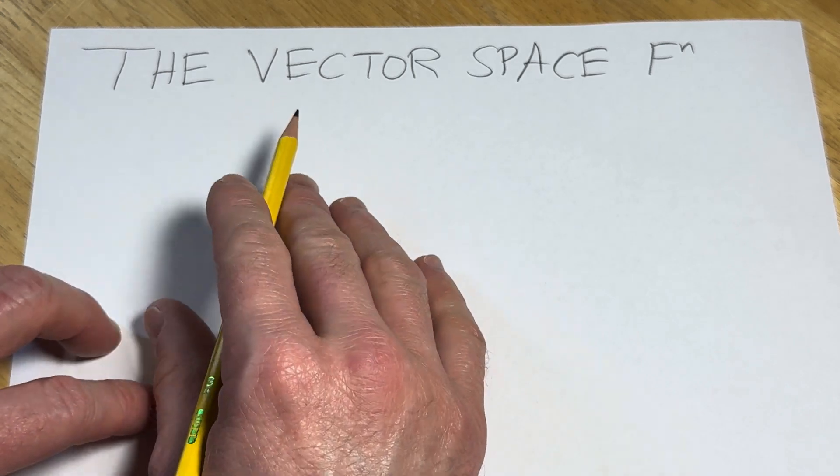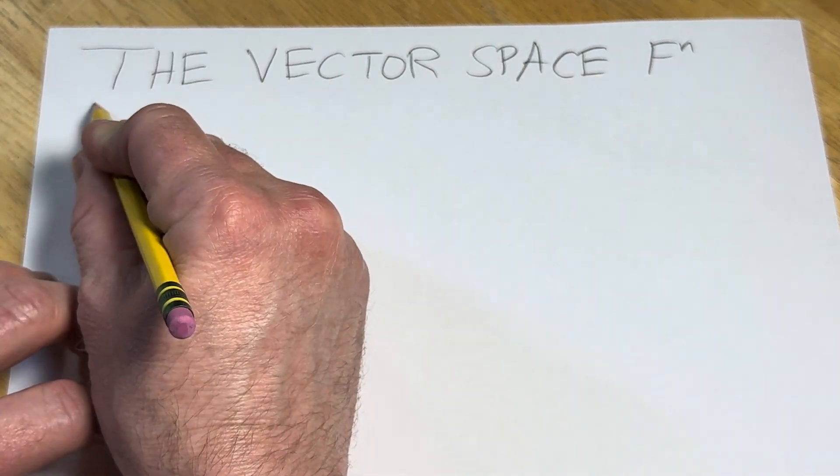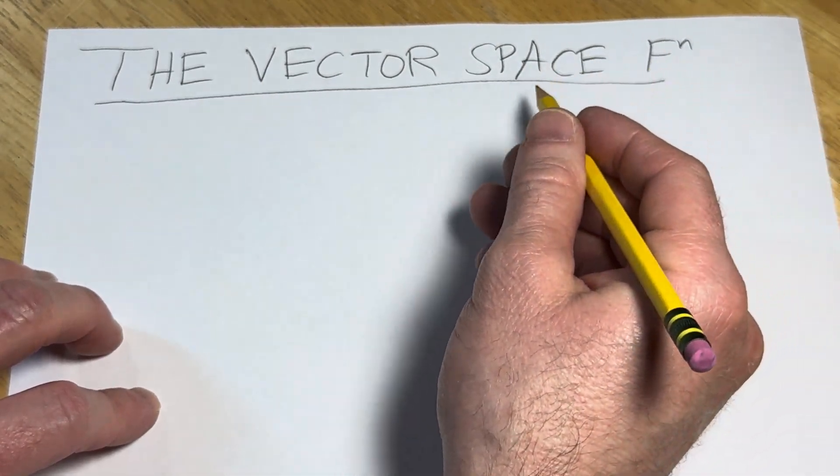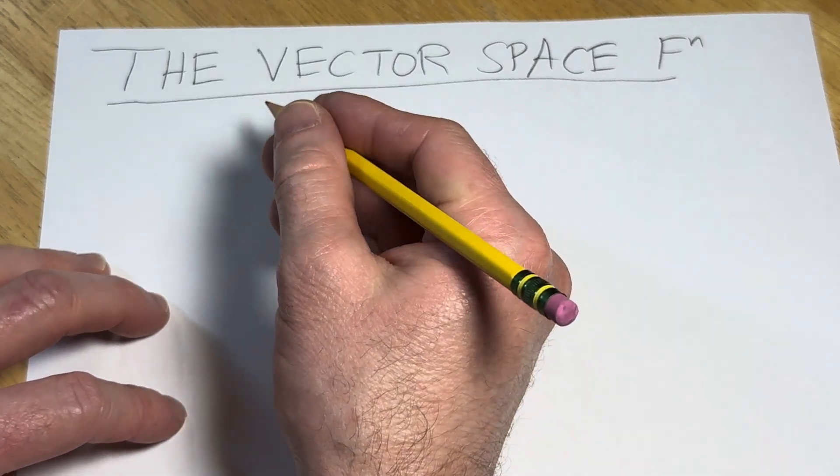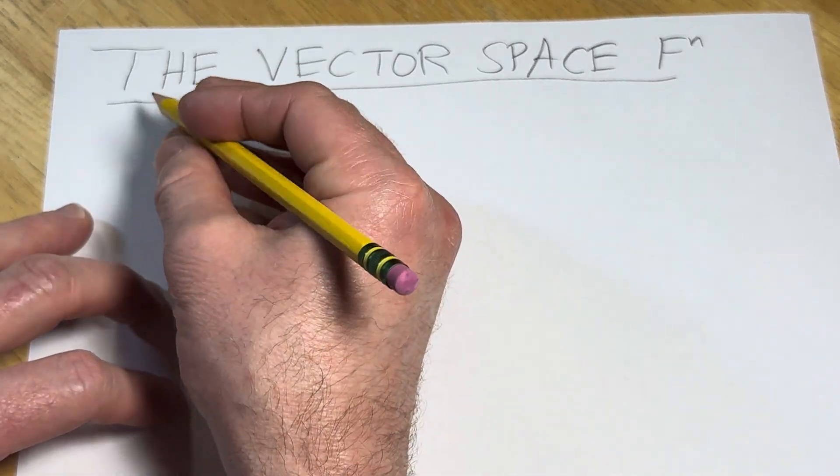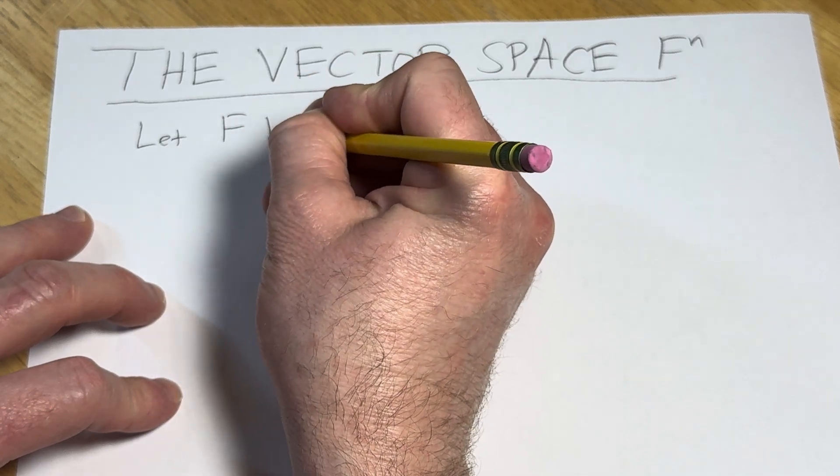And this particular vector space is called the vector space F to the n, or F^n. So you might be wondering, what is F? Well, F here is going to be any field, like the real numbers or the complex numbers. So let F be a field.